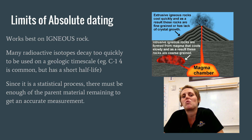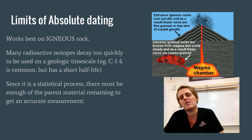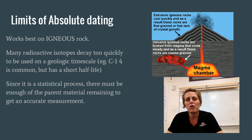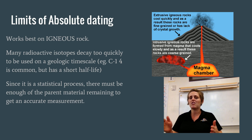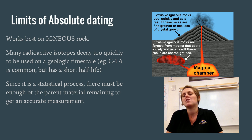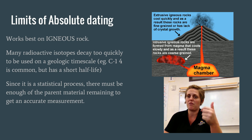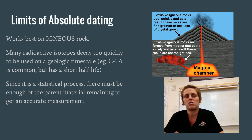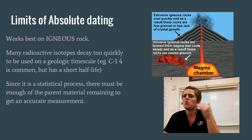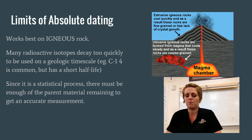Many radioactive isotopes decay too quickly to be used on a geologic timescale. Carbon-14 is relatively common, but its short half-life of about 5,700 years means that when you're looking at 4.5 billion years of geologic time, and only one out of every carbon atom is a C-14 atom, you don't have a measurable amount remaining after about 80,000 years. Since it's a statistical process, there must be enough parent material remaining to get an accurate measurement — just like in the half-life penny lab, results became less and less precise the fewer parent material you had.